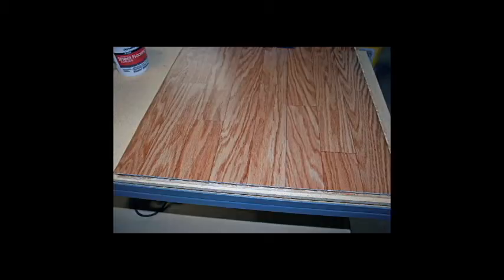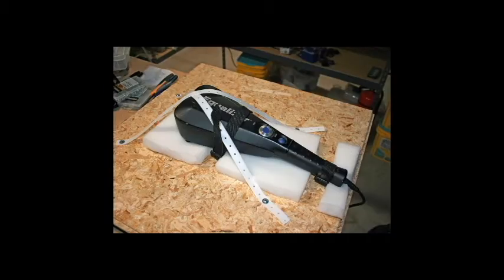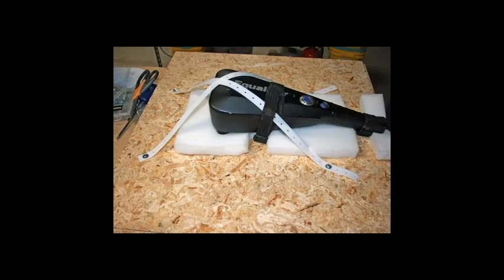Now that we have the vinyl glued onto the wafer board, we're going to go ahead and flip it over. And here you can see I have the vibrating massager strapped down. Now we put foam underneath it to kind of lessen the impact of the vibrations and also to help kind of hold the massager into place.